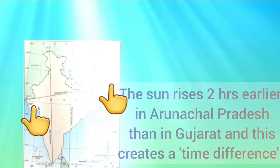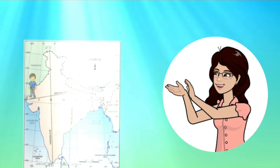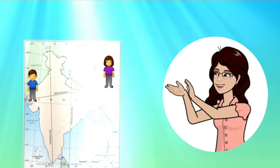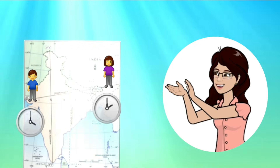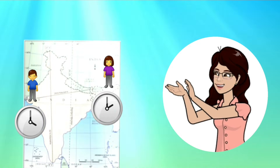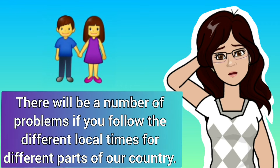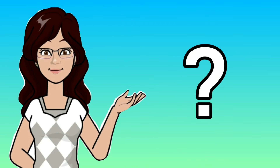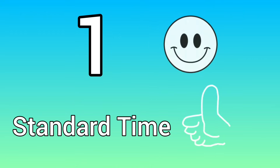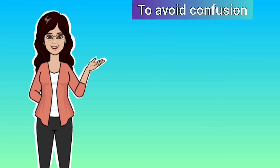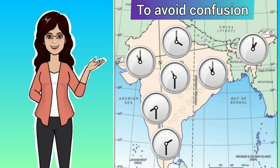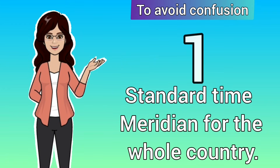If you are staying in Gujarat and your best friend is in Arunachal Pradesh, you both will have different times on your watches. When your watch shows 4 PM, your friend's watch will show 2 PM. This would be very confusing. There will be a number of problems if we follow different local times for different parts of our country. So what if we have one standard time for the whole country?